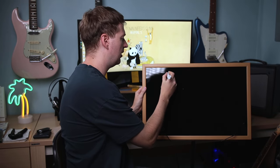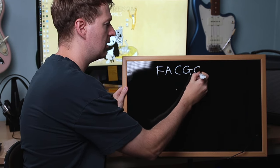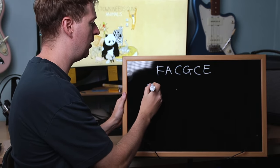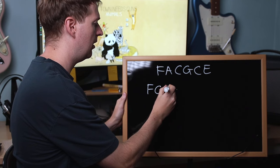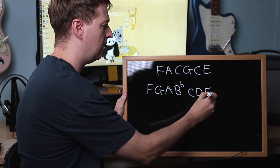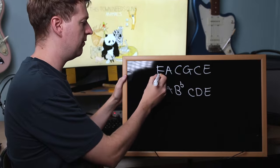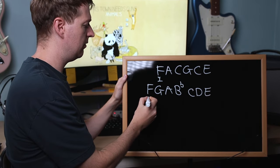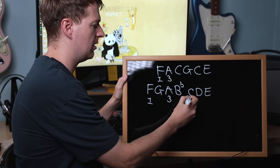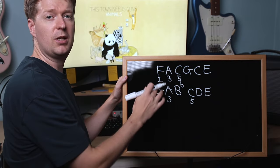For example, we are using F, A, C, G, C, E. If we consult the F major scale — F, G, A, B-flat, C, D and E — we can go through the tuning and work out which scale degree each note is. F is the one, A is the third degree, and C is the fifth scale degree. So you have an F major triad there.